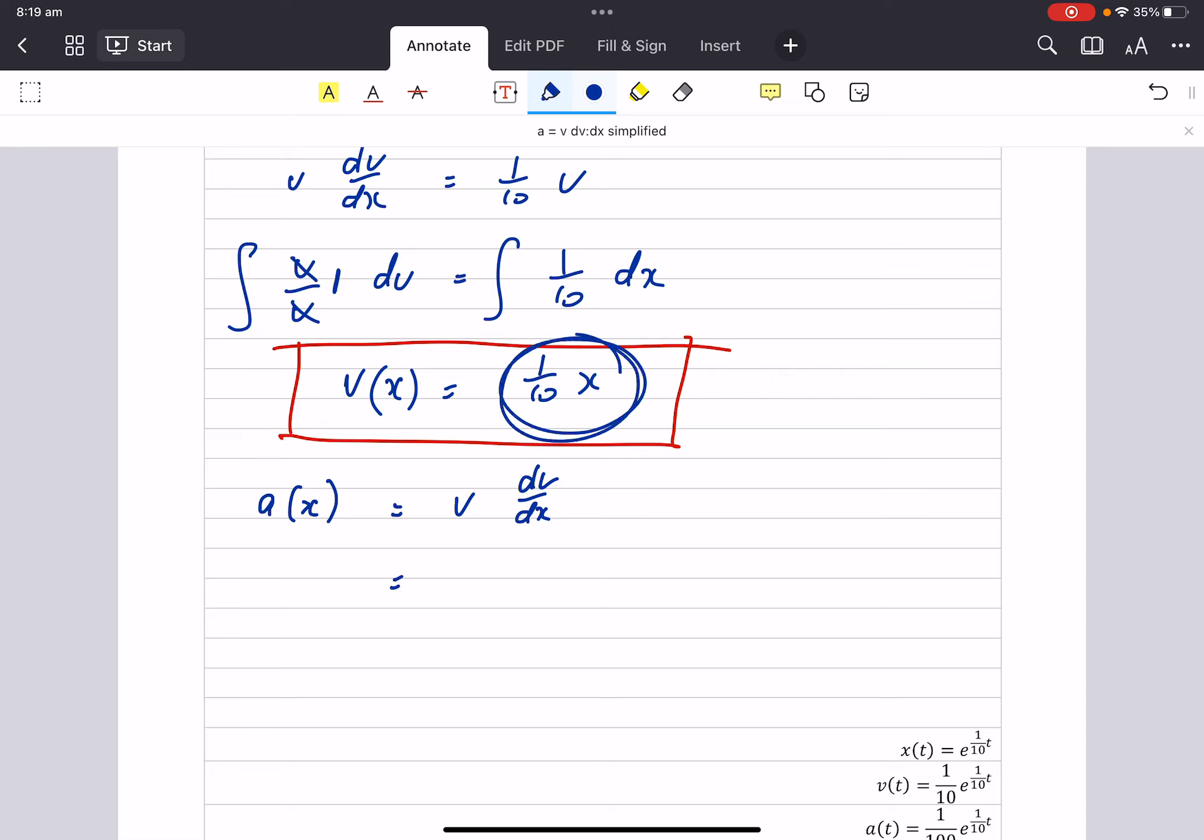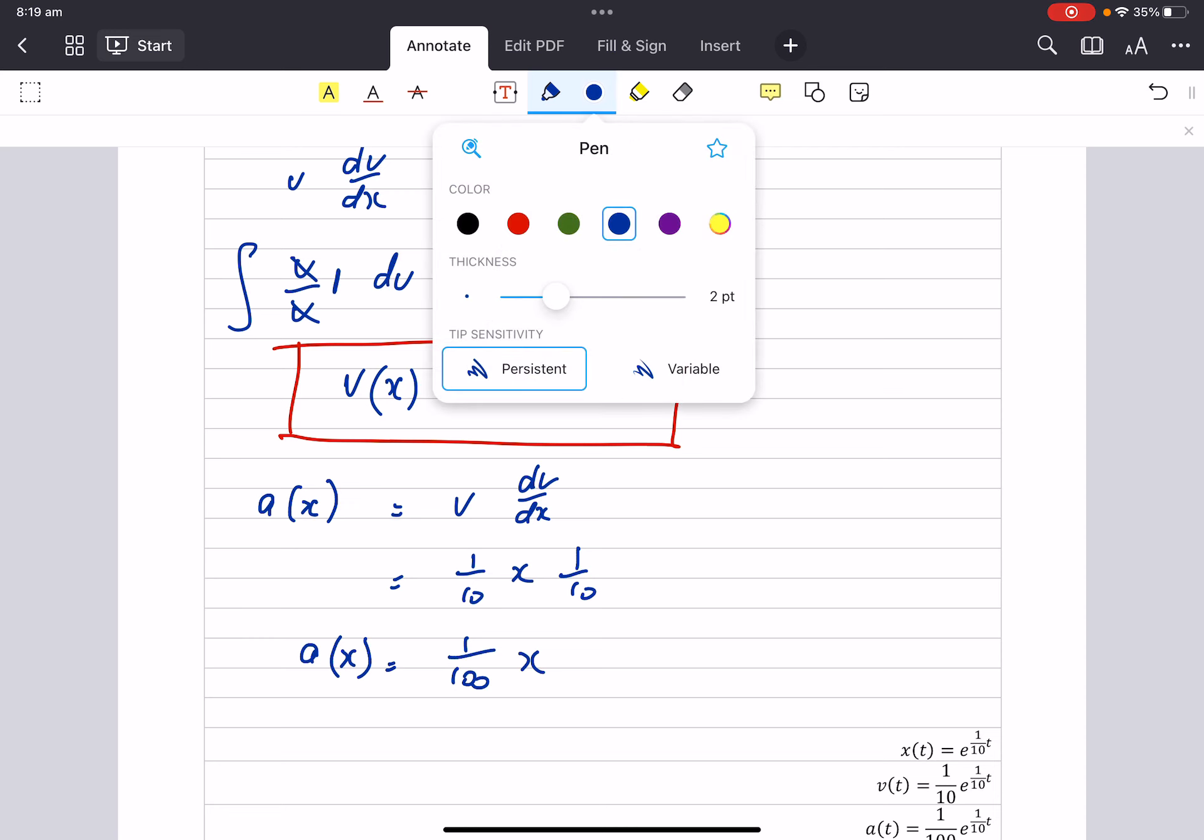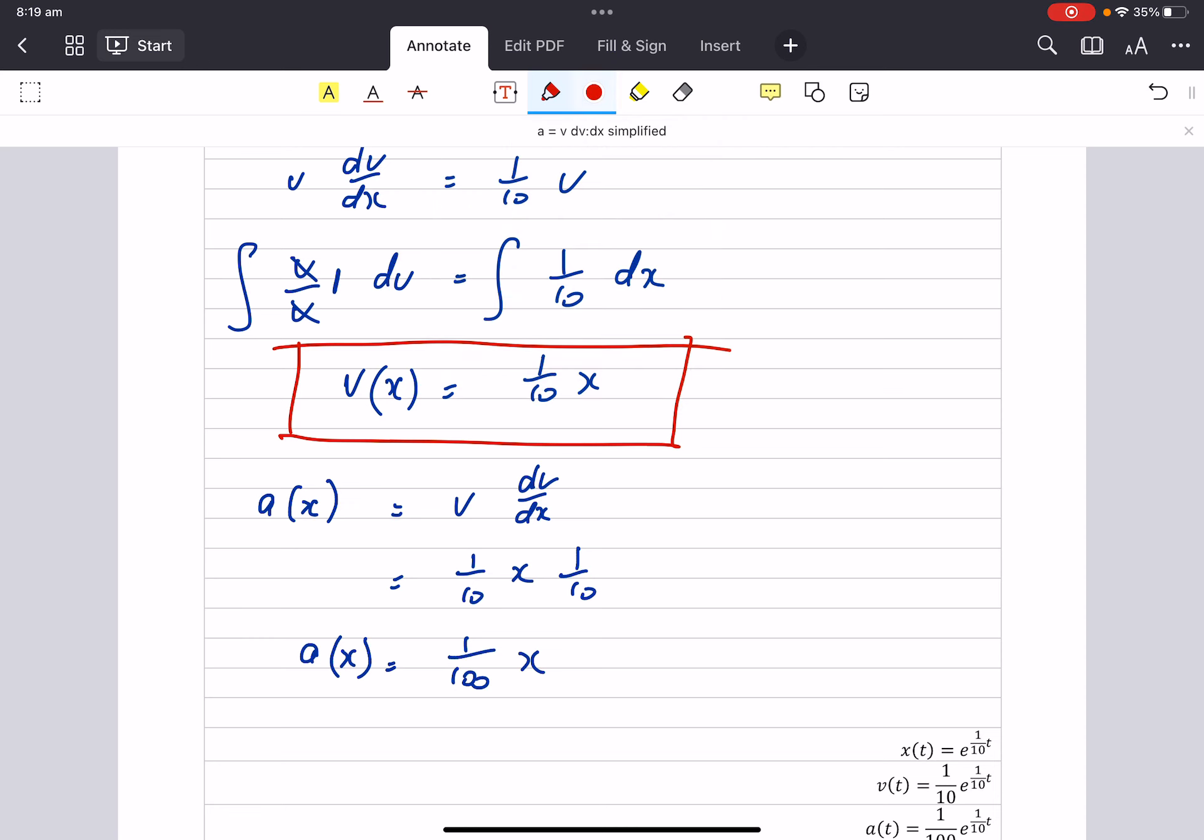Well v I can see is one tenth of x and dv dx is the derivative of this thing here because that's a v of x function. So that's one tenth. So I'm going to get an acceleration displacement function of one on one hundred x. So that's acceleration in terms of displacement not time.